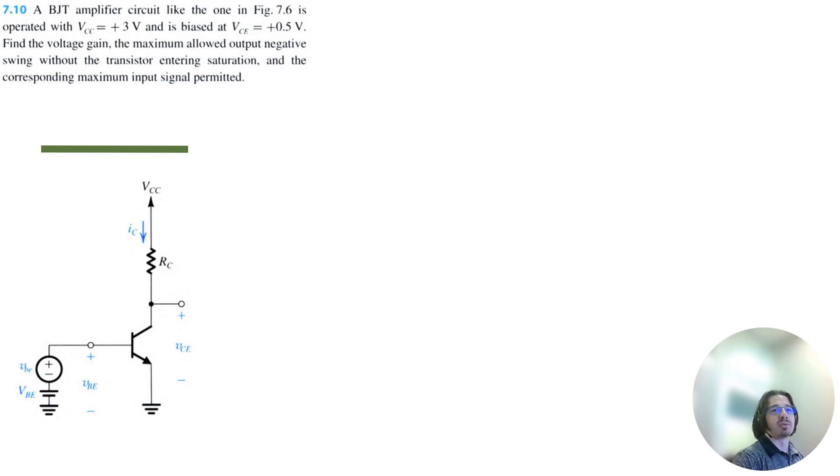Let's solve problem 7.10 for Microelectronics Circuits 8th edition by Sedra and Smith. We have a BJT amplifier like the one in this figure, and it's operated with VCC equals 3 volts and biased at VCE equals 0.5 volts.